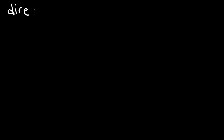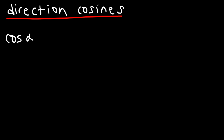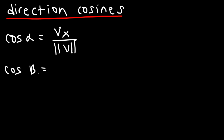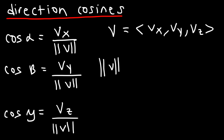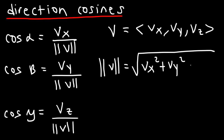The direction cosines are simply the cosines of those three angles. We have cosine alpha, which is the x component of the vector divided by its magnitude. And then cosine beta, which is the y component of the vector divided by the magnitude of vector v. Vector v can be broken down into its three components vx, vy, and vz. The magnitude of vector v is equal to the square root of vx squared plus vy squared plus vz squared.